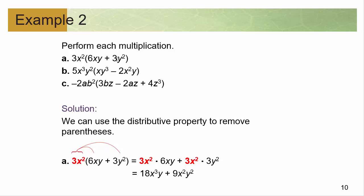All you're doing is distributing through. You're going to take this 3x² and multiply it by each piece — this big clunky-looking thing — multiply it by each piece. And negative 2ab², multiply it by each piece. So 3x² times the first thing, just like we did before: multiply the constants, that gives you 18; multiply the x's, that gives you x³; and then the y just goes along for the ride.